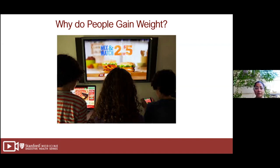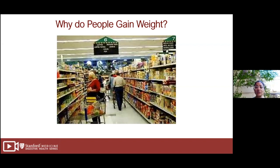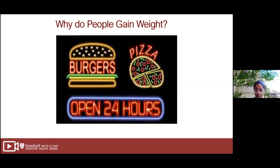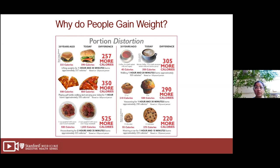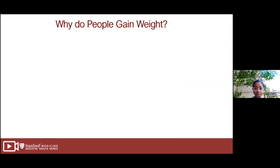There's sensory overload when we walk into supermarkets, and the choices can be overwhelming. There's also the abundance and availability of food around the clock — not necessarily the healthiest foods. There's also been a significant shift in how we utilize portions. Looking at food 20 years ago compared to today, it's not surprising that obesity and weight challenges have become such a big problem for society.